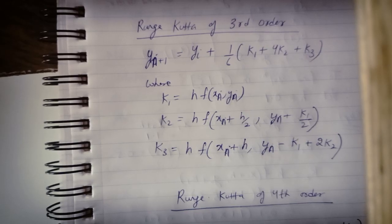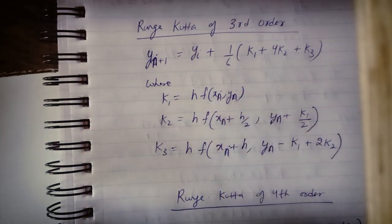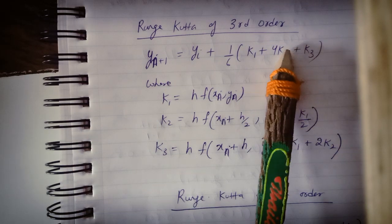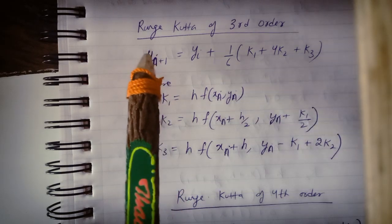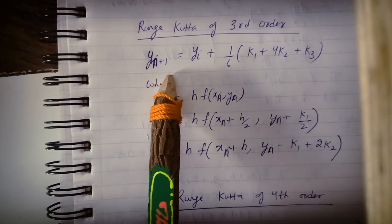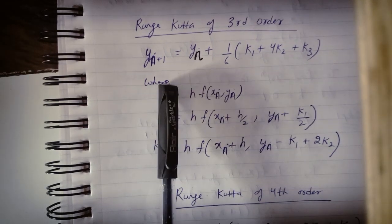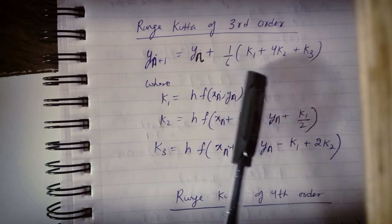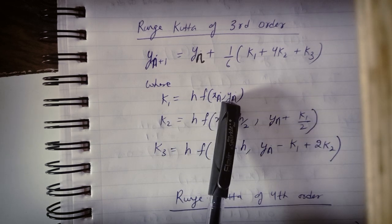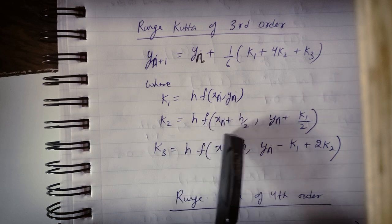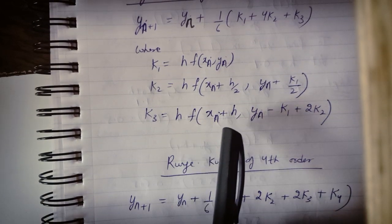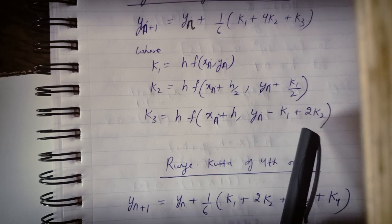Similarly, we have Runge-Kutta method of order 3. In order 2 we had k1 and k2, and used them to find yn+1. In order 3 we will use k1, k2, and k3 for better approximation. The formula: yn+1 equals yn plus 1/6 times k1 plus 4*k2 plus k3. Where k1 is h into f of xn, yn; k2 is h into f of xn plus h/2, yn plus k1/2; and k3 is h into f of xn plus h, yn minus k1 plus 2*k2.